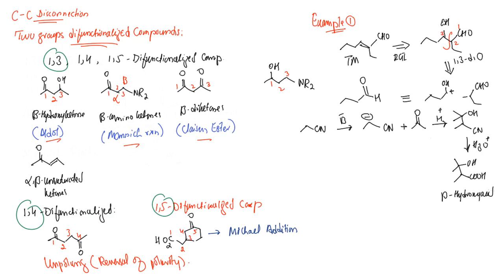Alternatively, the CN group can be reduced to give a hydroxy amine. This is an application for a nitrile compound, which can play the role of a carbon nucleophile — an anion — for adding to a carbonyl compound such as an aldehyde or ketone.